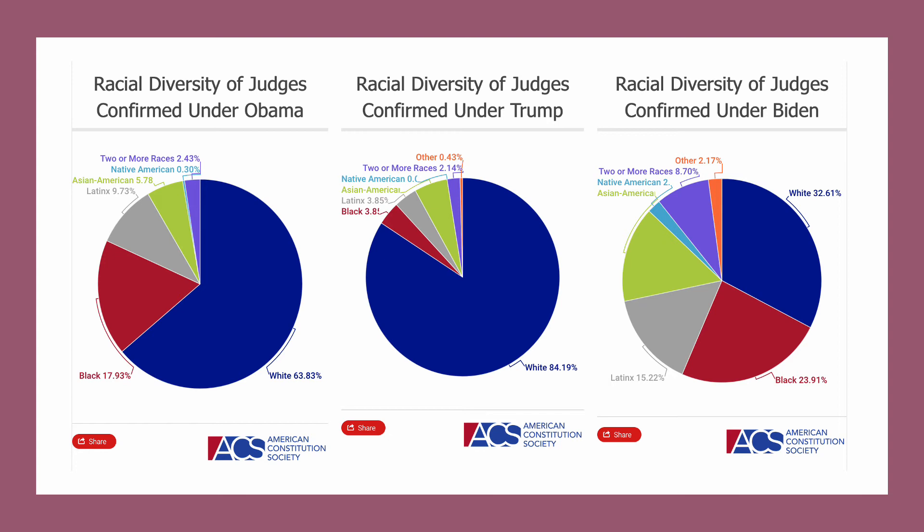Looking at the racial breakdown by president: under Obama, 63% of appointed judges were white. Under Trump, 84% were white — only 3.8% were Black and only 3.8% Latinx. Under Biden, no president in history has appointed such a diverse bench: only 32% white, 24% African American, 15% Latino, and so forth.